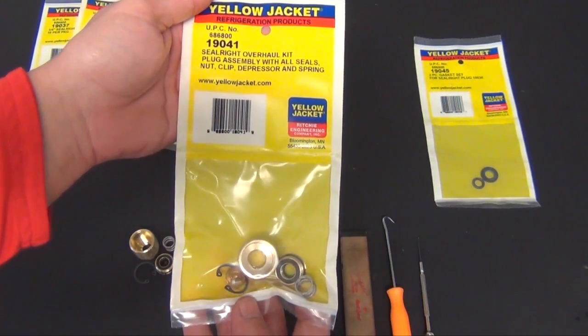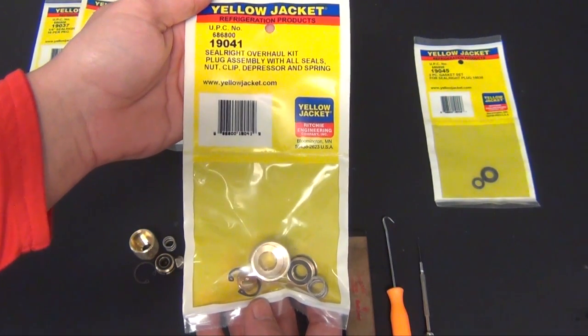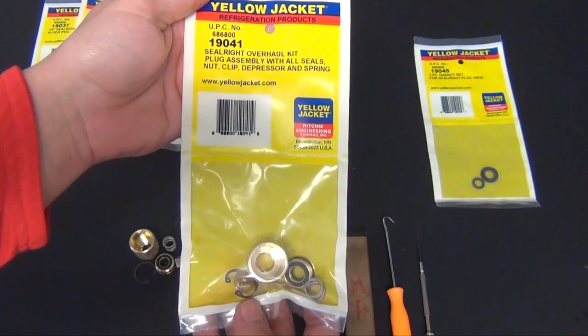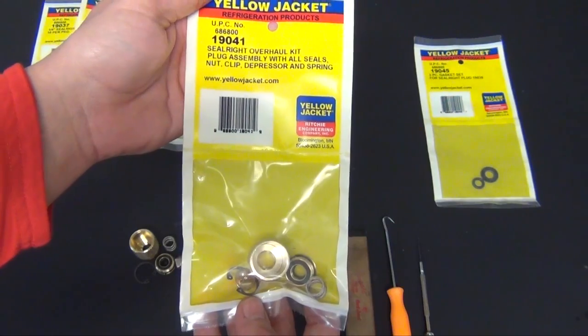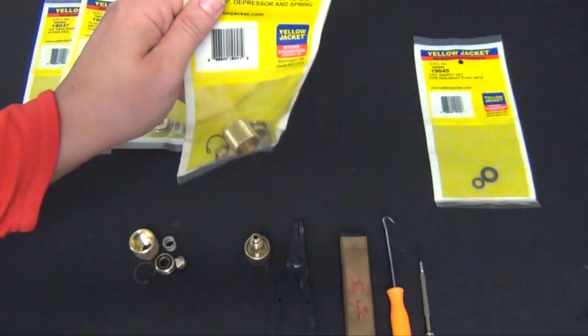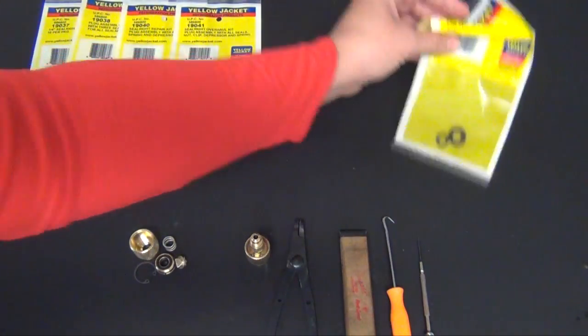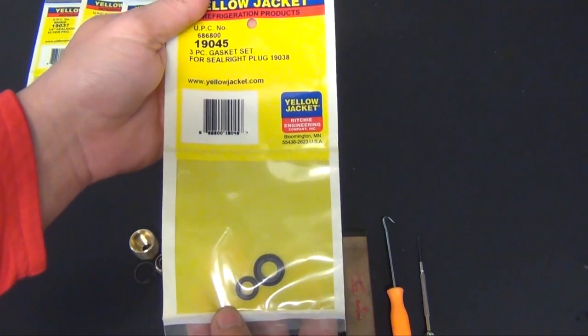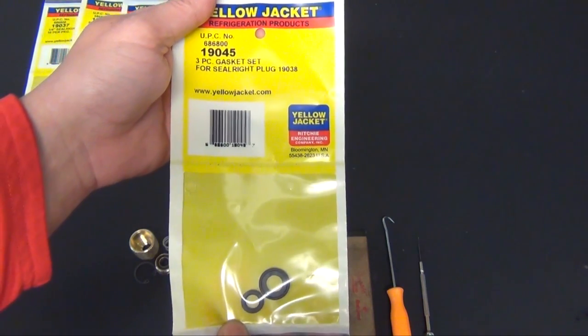We have the 19041 which is the Sealrite overhaul kit. It comes with the plug assembly with all the seals, the nut, clip, depressor and spring and this is what I'm going to be using. We also have the 19045 which is just the gasket set.